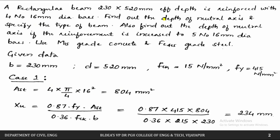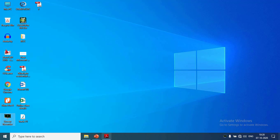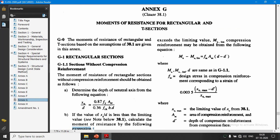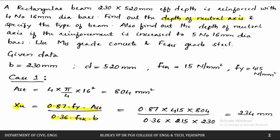Next we calculate the depth of the neutral axis using the formula: XU = 0.87 × FY × AST / (0.36 × FCK × B). This formula is also given in Annexure G of the IS code for rectangular sections. Substituting FY = 415, AST = 804, FCK = 15, and B = 230 mm, we get XU = 234 mm.